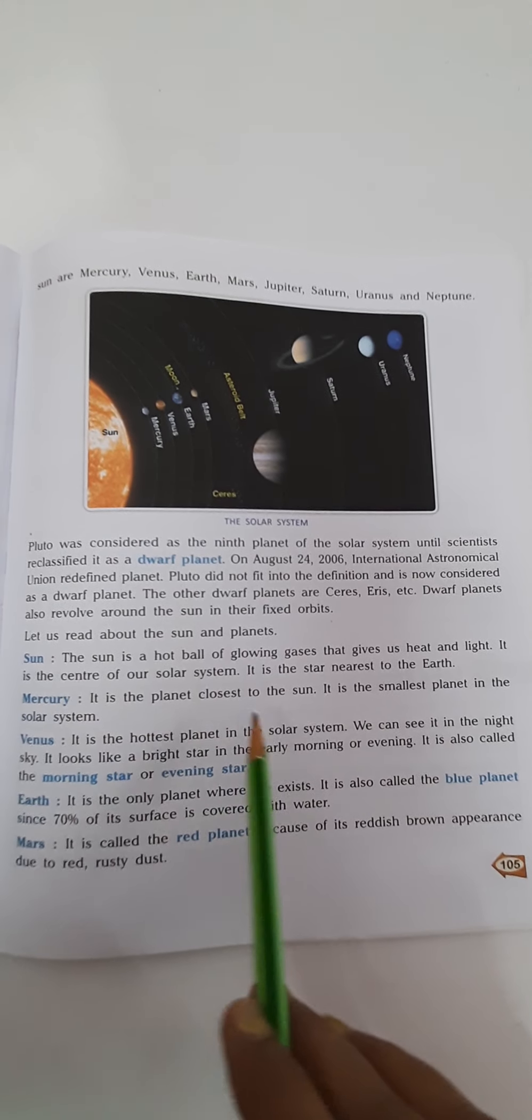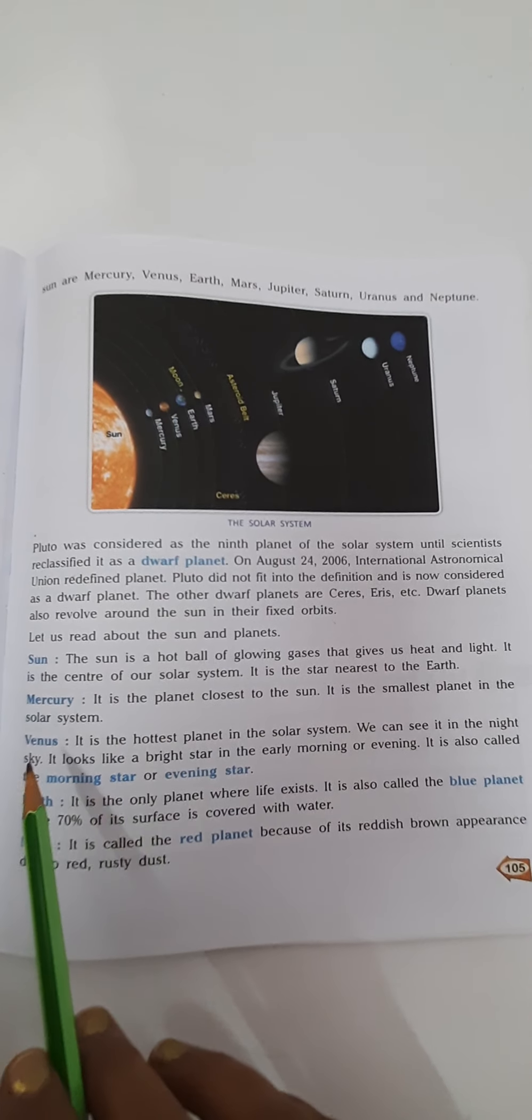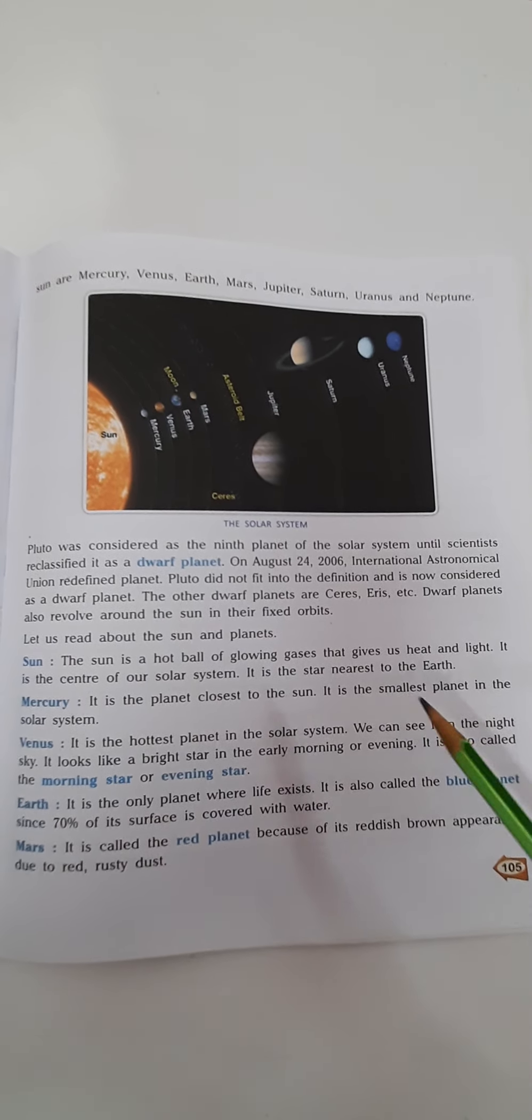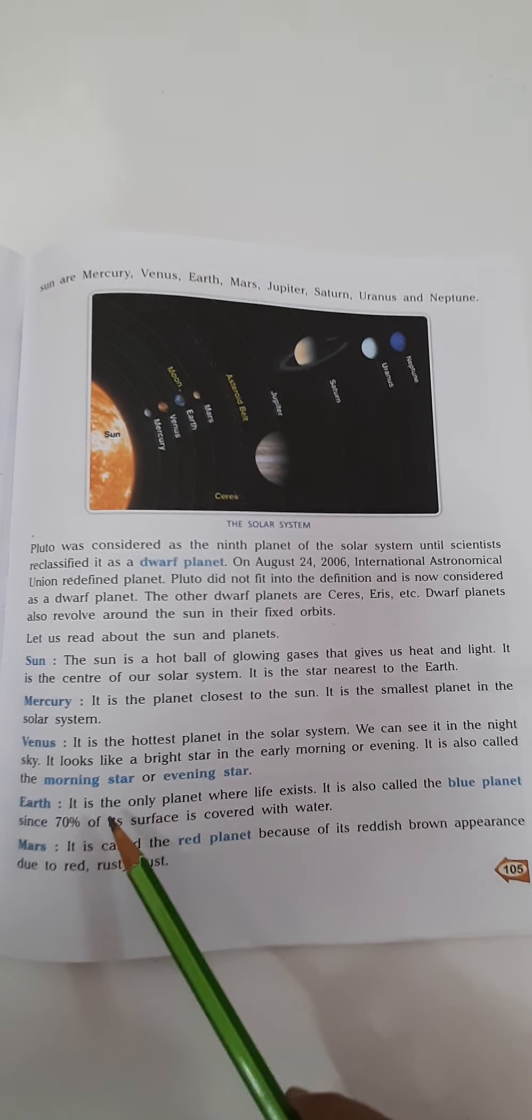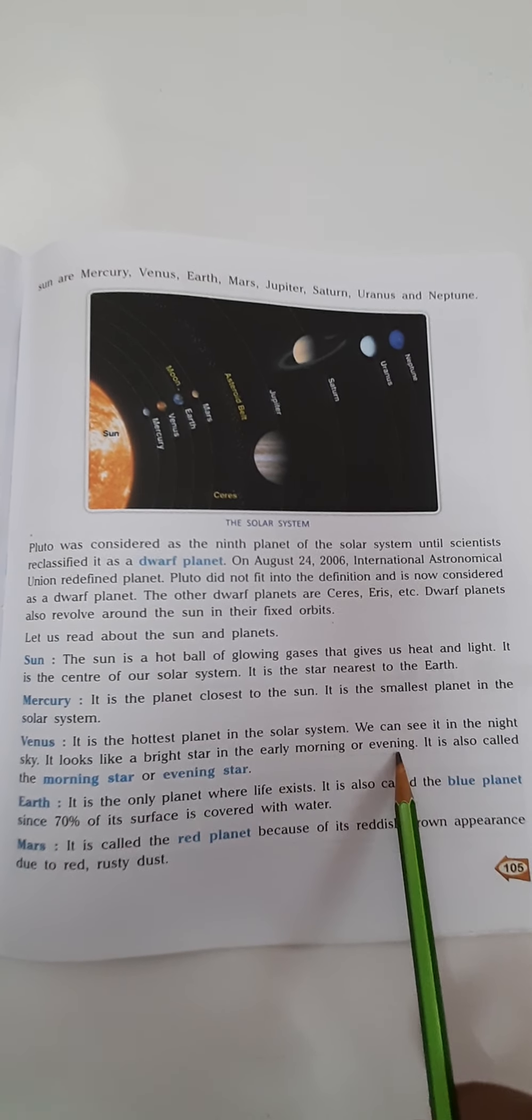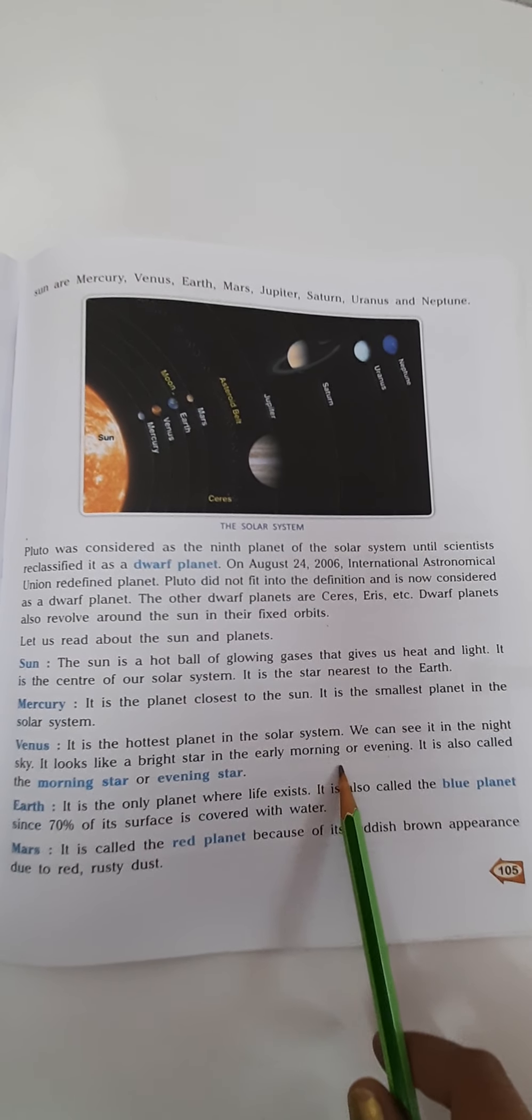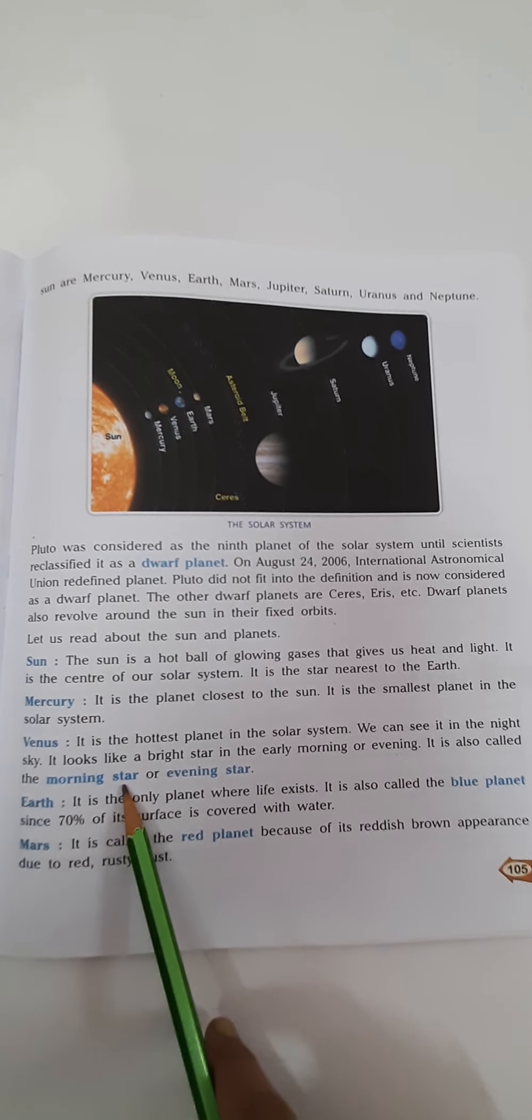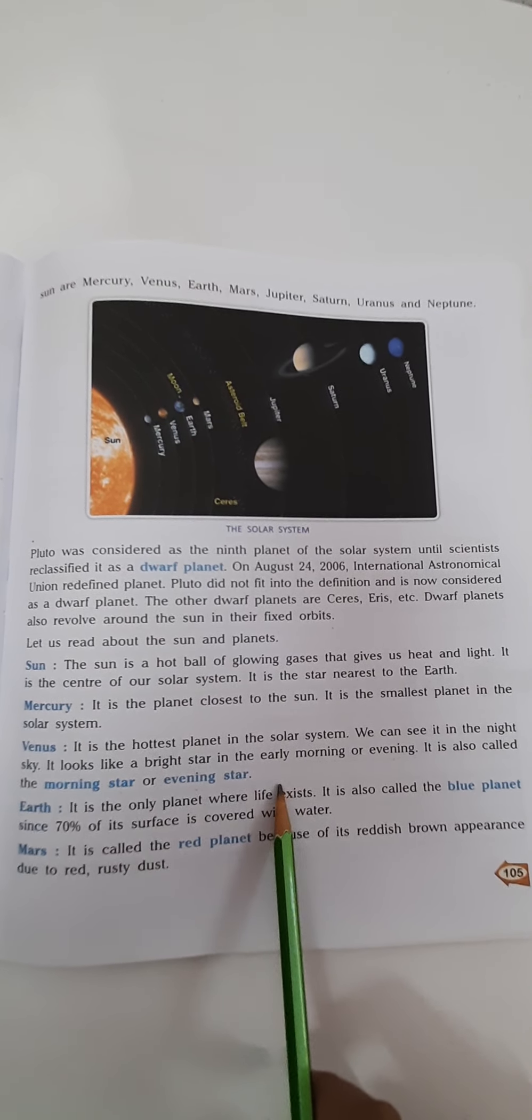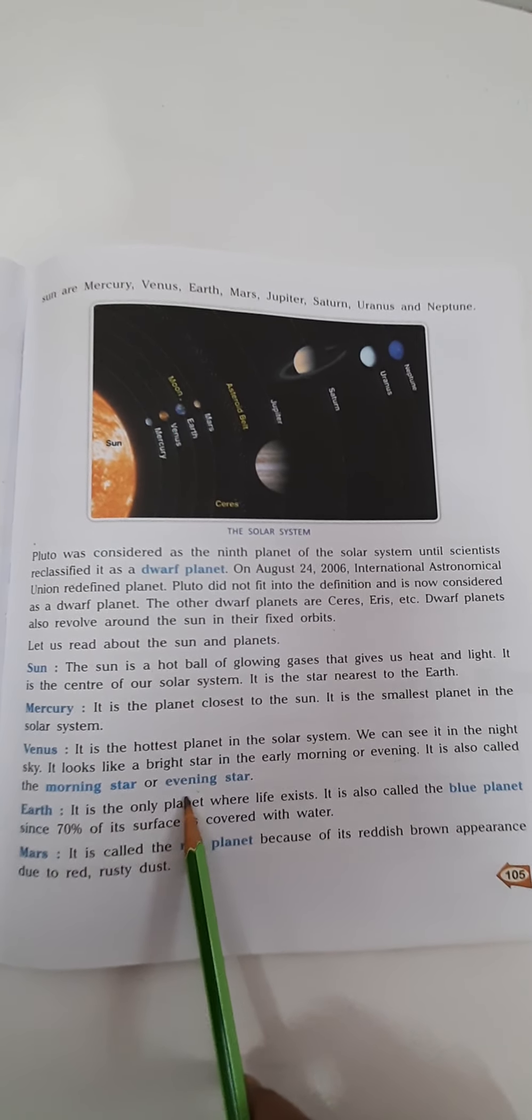Mercury is the planet closest to the sun. It is the smallest planet in the solar system. Next is Venus. It is the hottest planet in the solar system. We can see it in the night sky. It looks like a bright star in early morning or evening. Venus can be easily seen during the evening, just after sunset. It is also called the morning star or the evening star because you are able to see it in the early morning and in the evening.